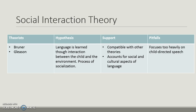The social interaction theory — Brenner and Gleason — argues that language is learned through interaction between the child and the environment as a process of socialization. This is compatible with other theories and accounts very well for social and cultural aspects of language acquisition. However, it focuses too heavily on child-directed speech.